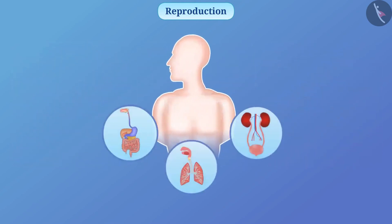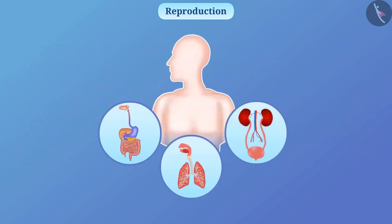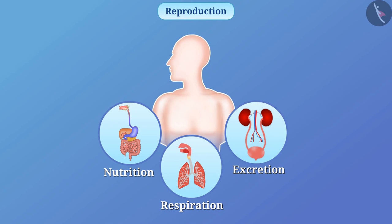We know that various processes like nutrition, respiration, excretion, etc. help to keep the organism alive. Reproduction is different from these processes. It helps the organism to keep its species alive.